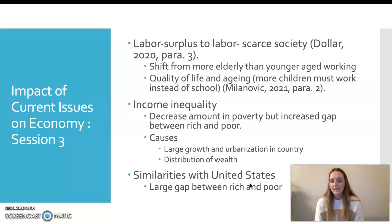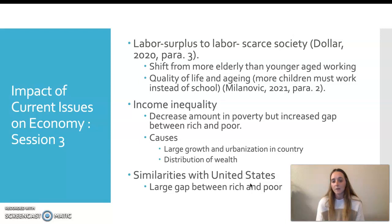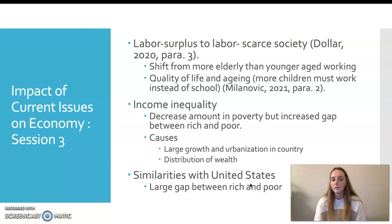China is also facing income inequality, which is also happening in the United States. Their main goal lately has been to decrease the amount of people in poverty, bringing more to a middle class rather than a lower class, but it has also increased the gap between rich and poor. Part of this is because of large population growth and urbanization in the country, with more people moving from rural to urban areas. Part of this could be helped through the distribution of wealth, just wages in general, as well as different job positions.